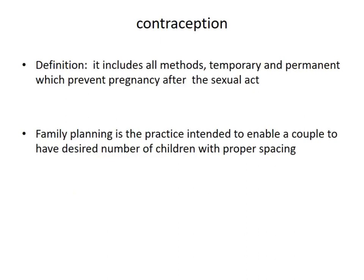Contraception by definition includes all methods, temporary and permanent, which prevent pregnancy after a sexual act. Family planning is a practice intended to enable a couple to have the desired number of children with proper spacing. So there are certain temporary measures and certain permanent measures.